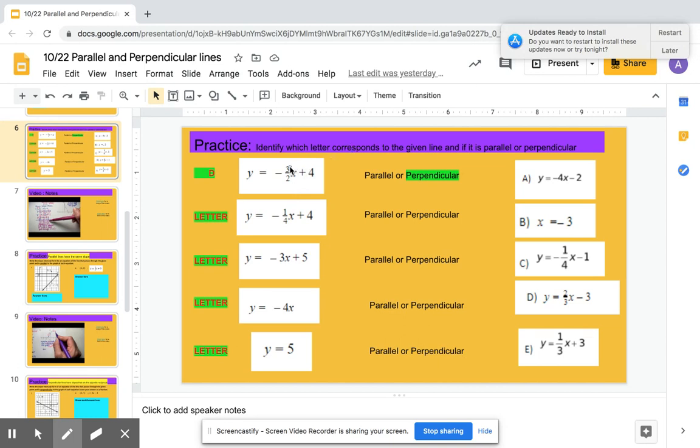I'm going to look at the slope of the given line. So here, the slope I want to recognize in the given equation is negative 3 over 2. So if my slope is negative 3 over 2, I'm going to look in these answer choices and look for a line that's parallel or perpendicular.